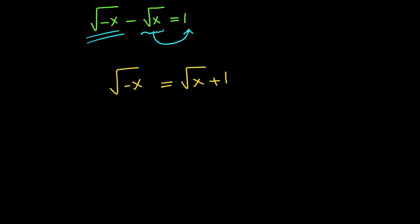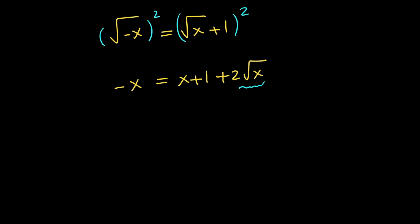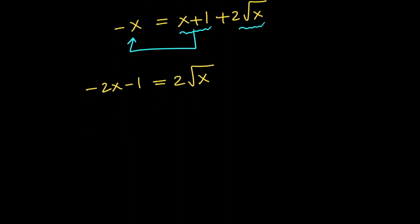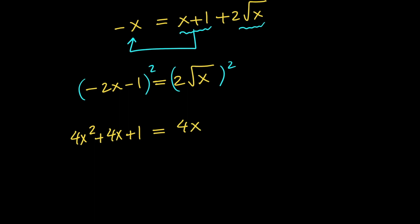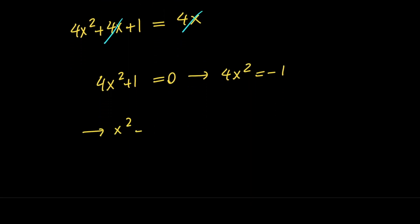Then, in order to get rid of the square root on the left-hand side, let's go ahead and square both sides. So we will have negative x equals x plus 1 plus 2 times the square root of x. Next, in order to isolate the square root on the right-hand side, we need to move these two to the left-hand side. So we will have negative 2x minus 1 equals 2 times the square root of x. Again, we need to square both sides to get rid of the square root. So we will have 4x squared plus 4x plus 1 equals 4x. Next, we need to subtract 4x from both sides, so we will end up with 4x squared plus 1 equals 0.